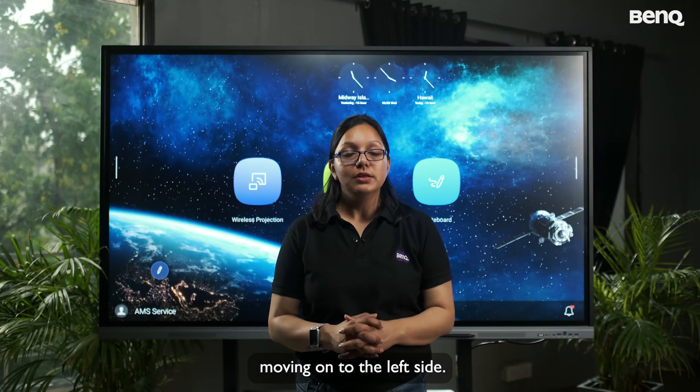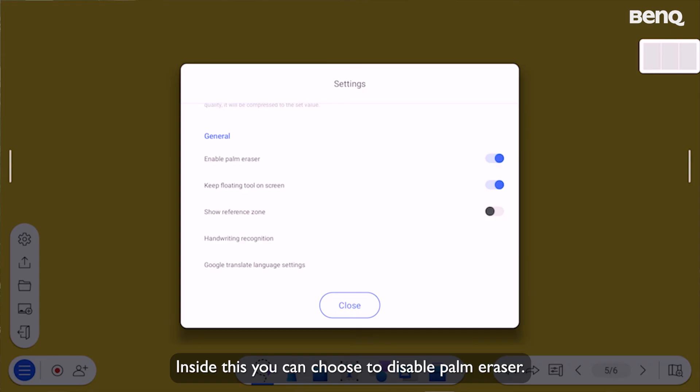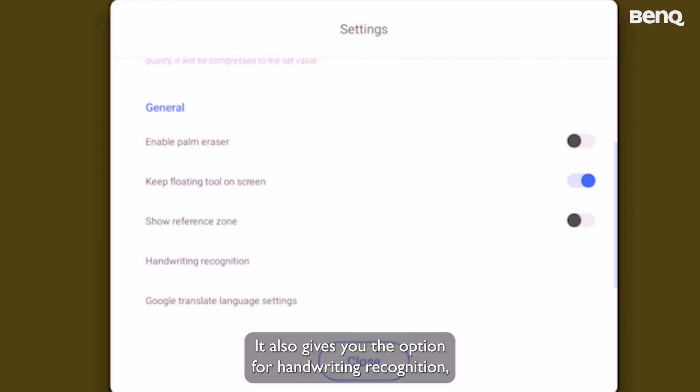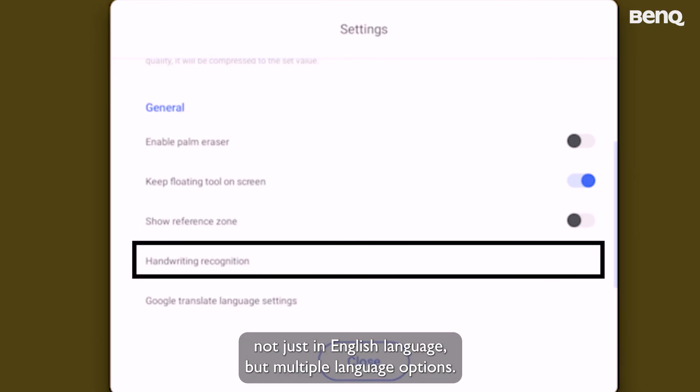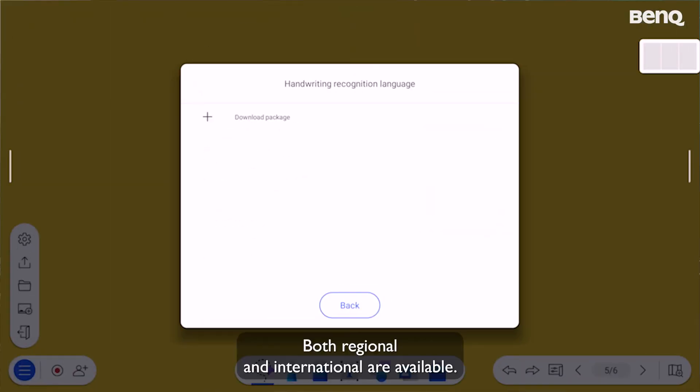Moving on to the left side, first we have the settings option. Inside this, you can choose to disable palm eraser. Then we have hide reference zone dotted lines. It also gives you the option for handwriting recognition. Not just in English language, but multiple language options, both regional and international are available. Handwriting recognition feature converts the handwritten text into print form.